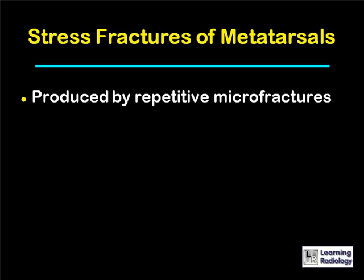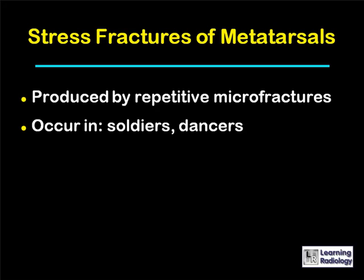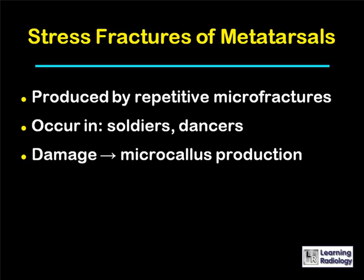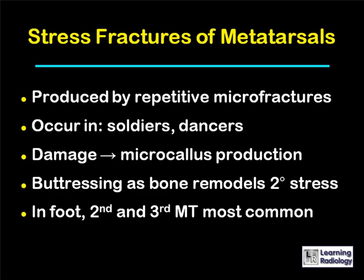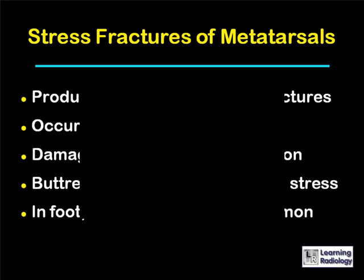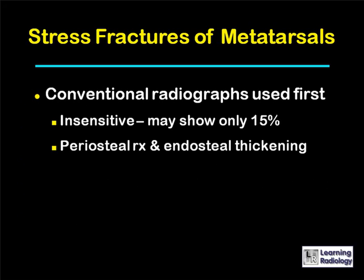Stress fractures of the metatarsals are generally believed to be produced by repetitive microfractures. They tend to occur in individuals with repetitive injuries, such as soldiers or dancers. The damage leads to first microcallus production and eventually gross callus production. There is buttressing of the bone as it remodels, leading to endosteal thickening. In the foot, the second and third metatarsals are the most commonly fractured. Conventional radiographs are almost always obtained first, but they are relatively insensitive, especially early on.